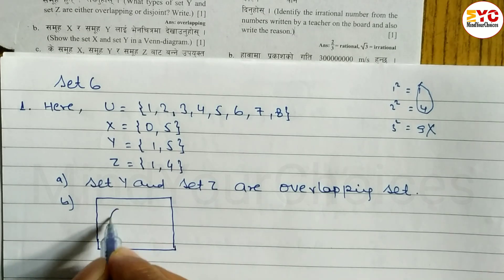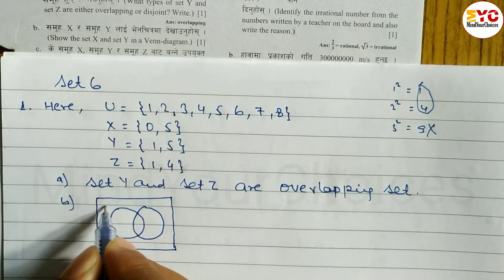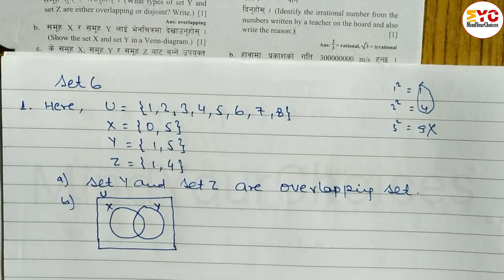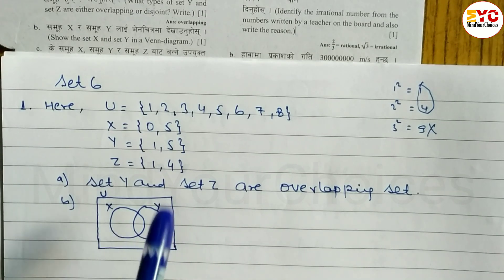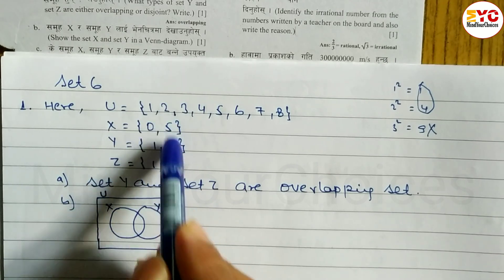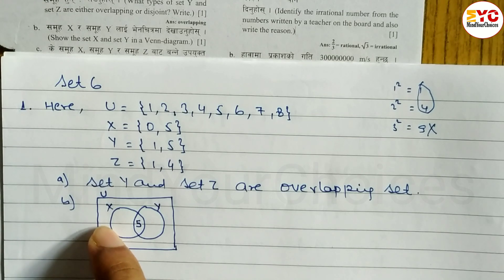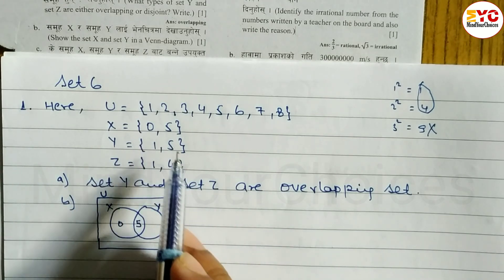For X or Y: looking at 1 and 5, the element 5 is common. So that's why we have to write 5, 6 and for X and Y. So when X is 0, that's why we have to write accordingly.